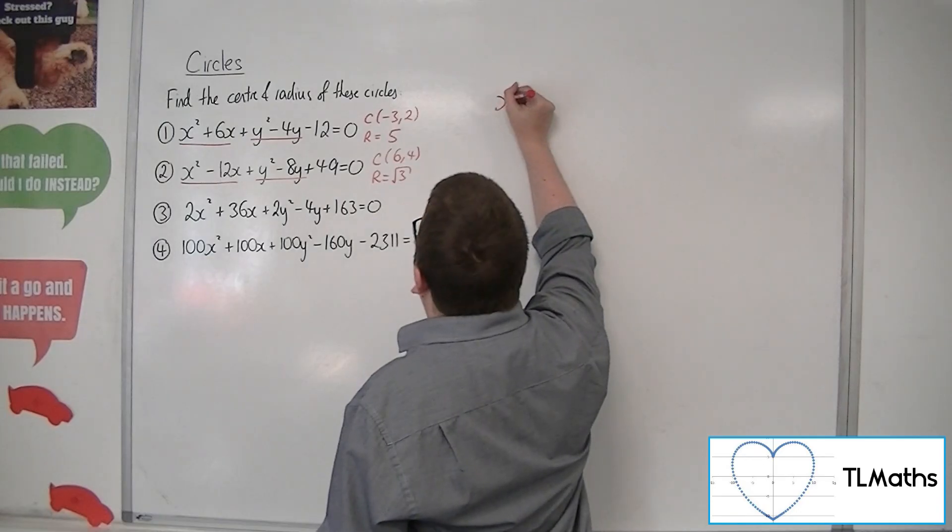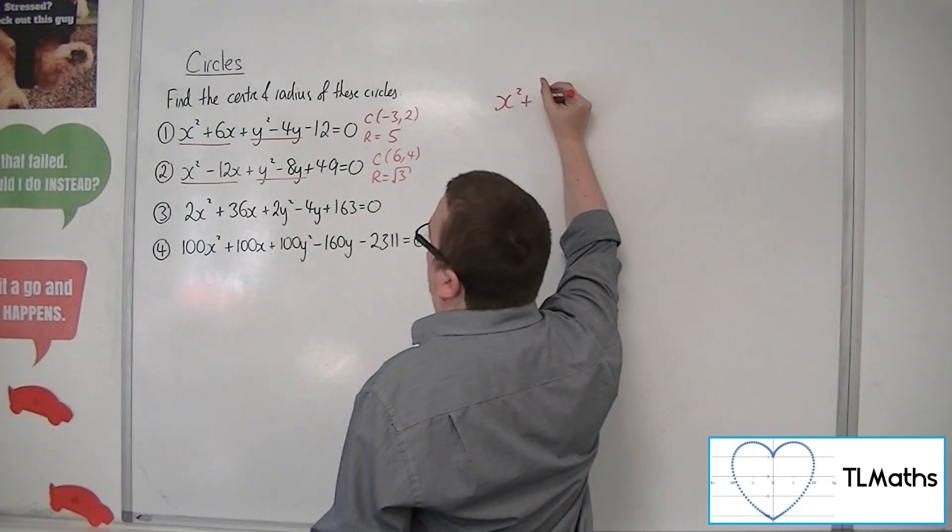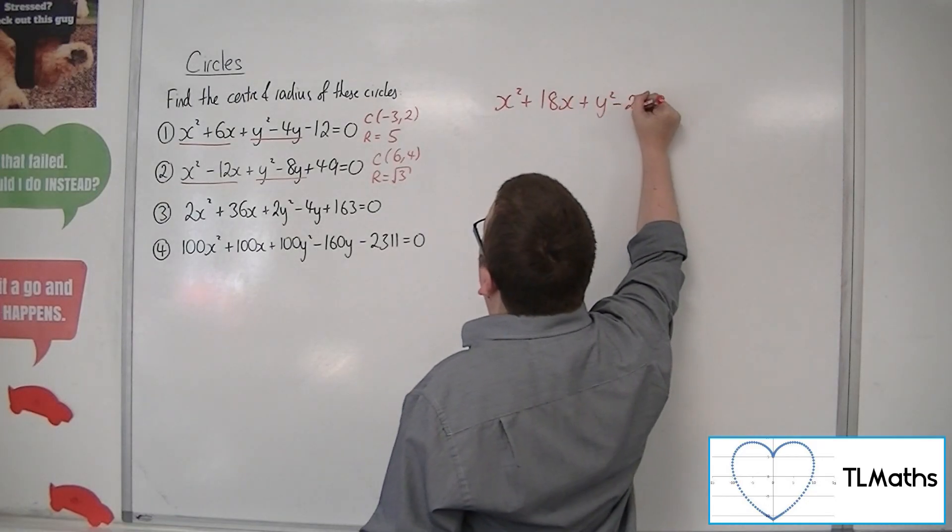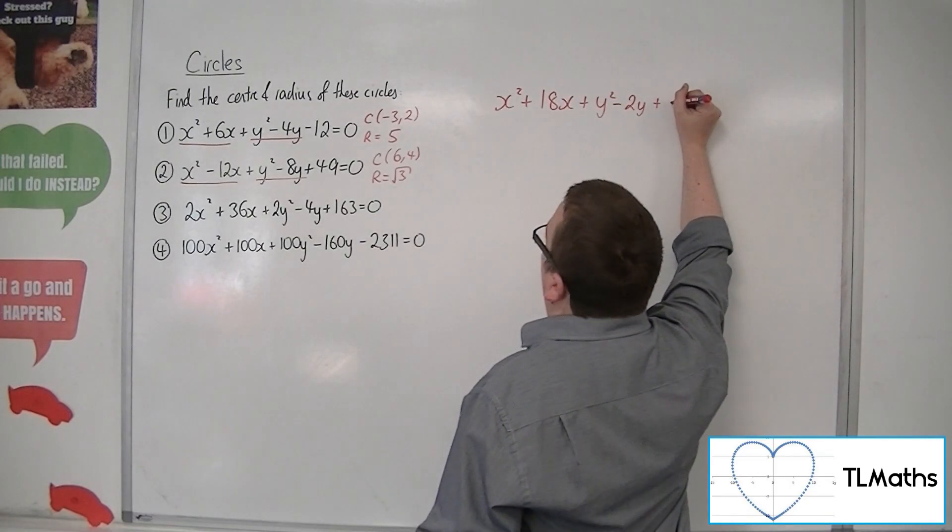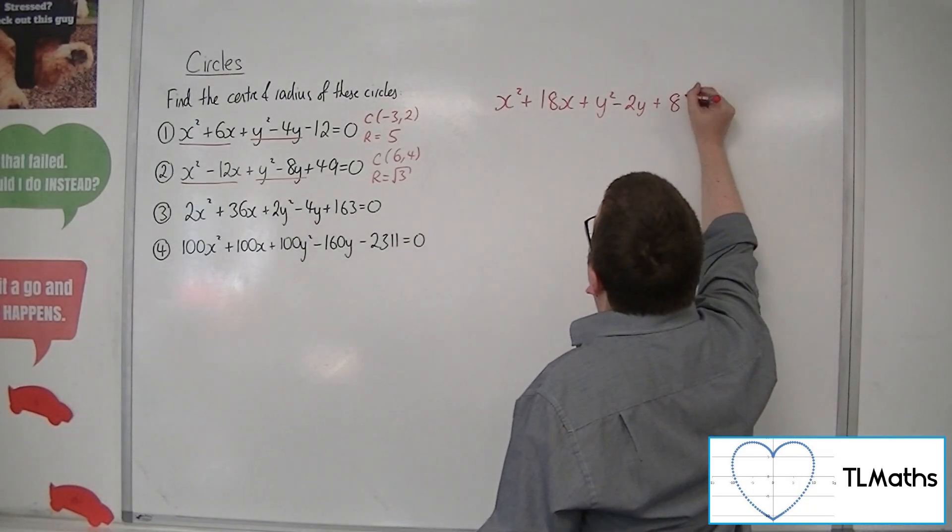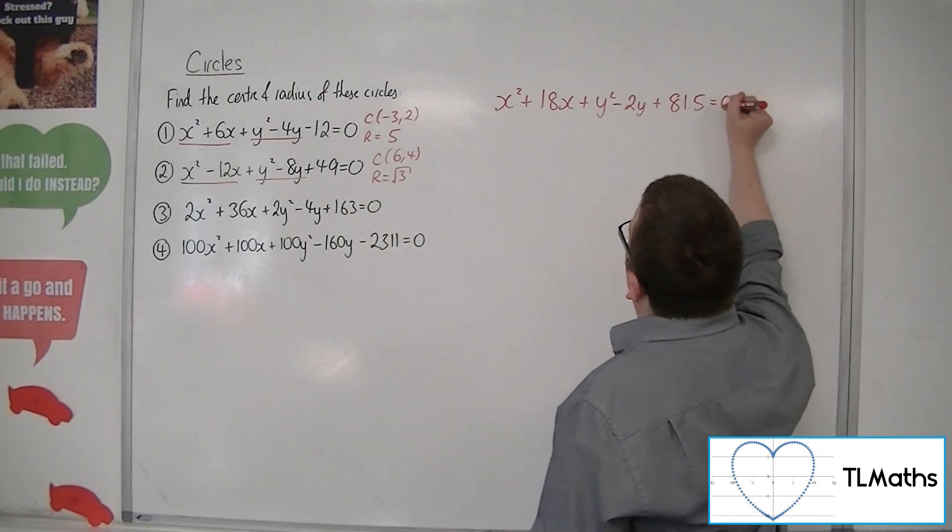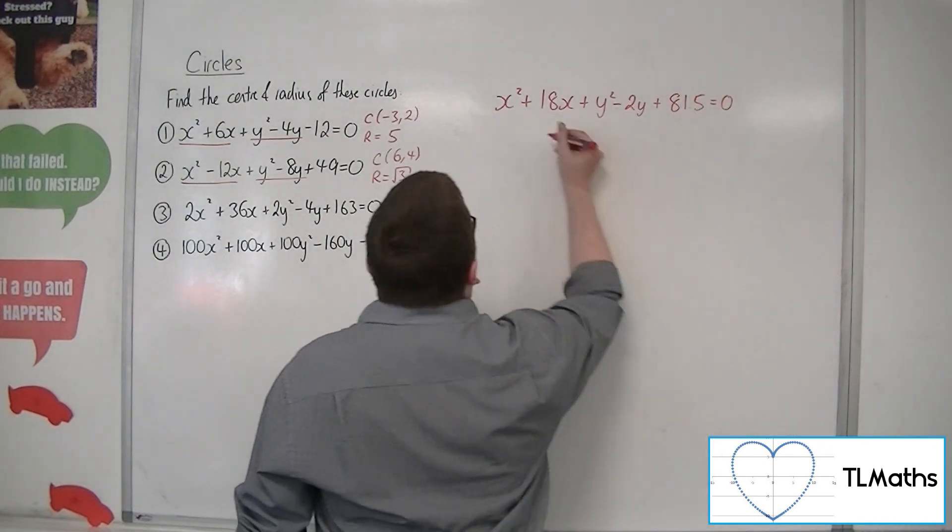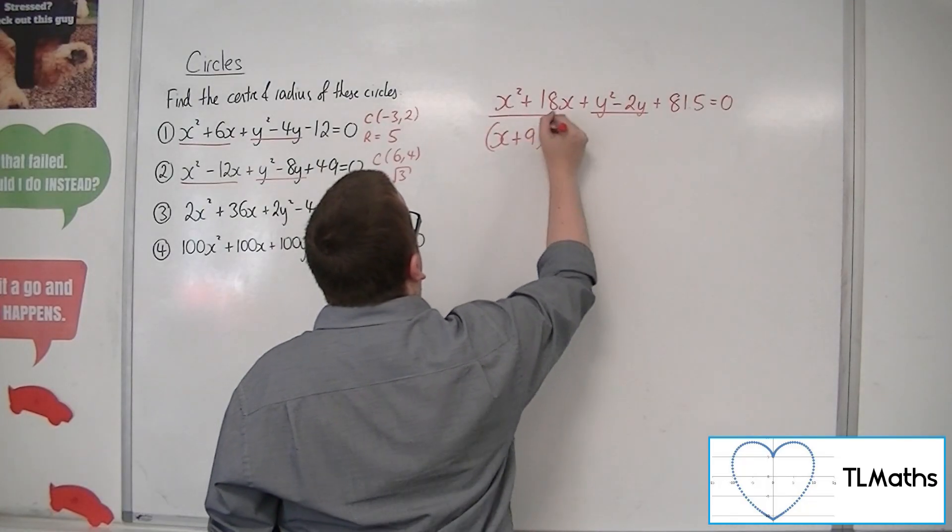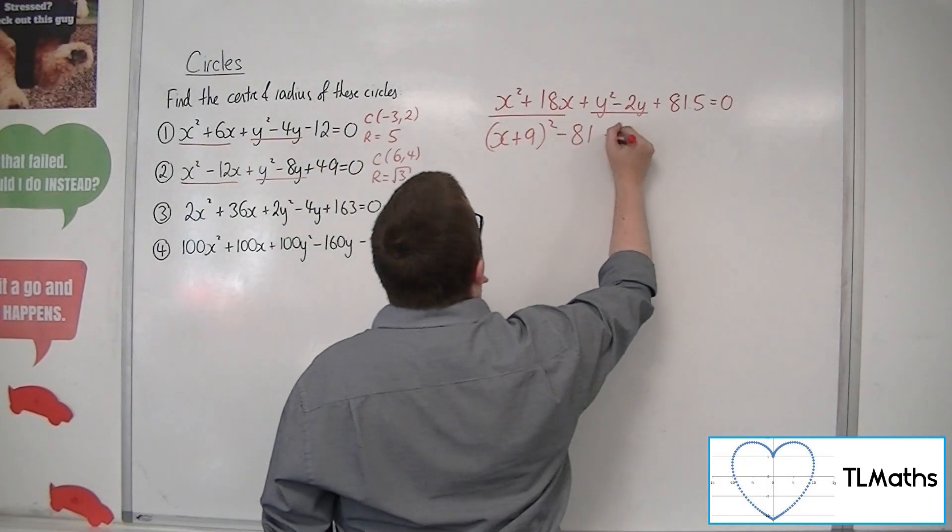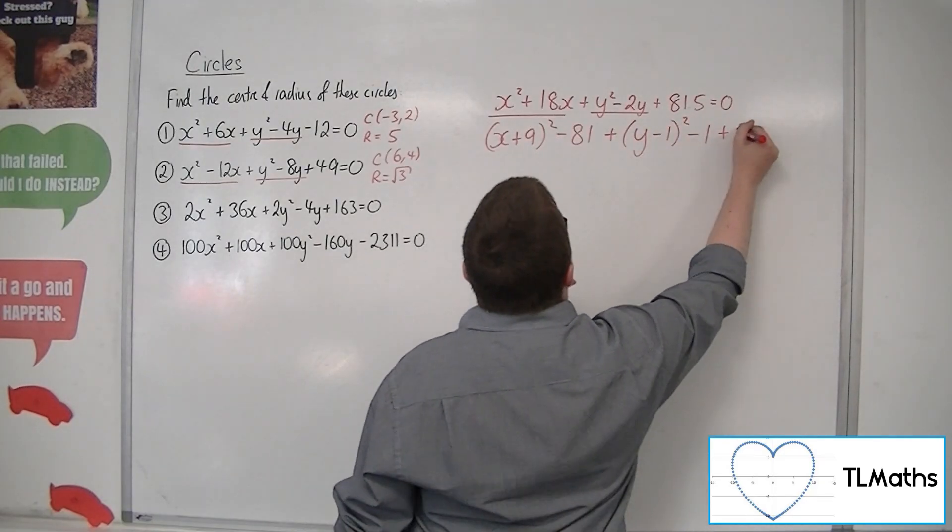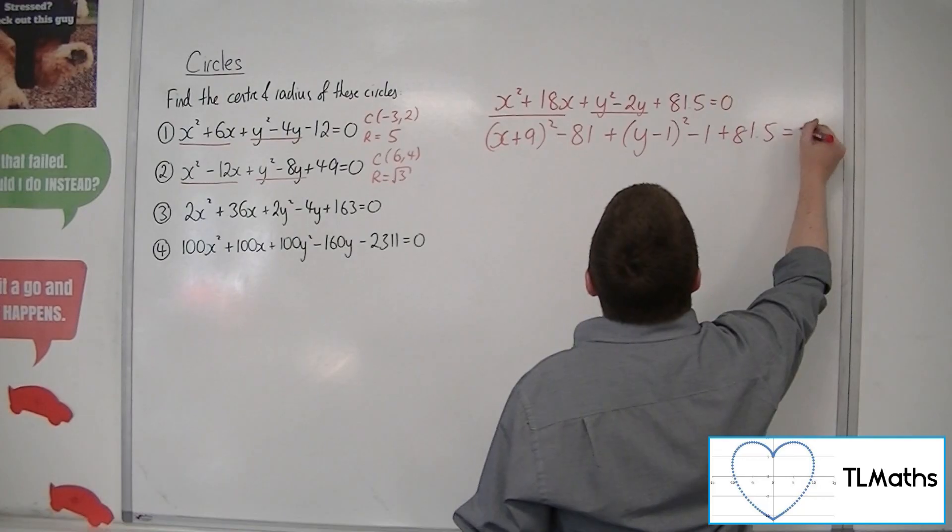So I'm going to have x squared plus half of 36 is 18, plus y squared minus 2y plus, what's that, 81.5 equals 0. So then complete the square on both parts. So x plus 9 squared minus 81, and then the second part, y minus 1 squared, take away 1, and I've got that 81.5 on the end.